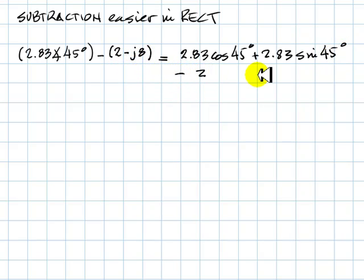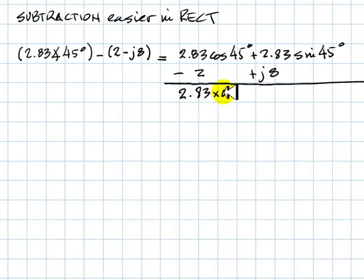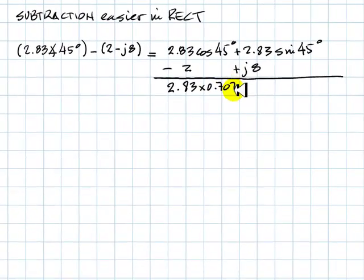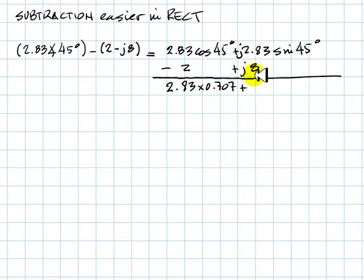That is minus 2 plus j8. We execute that operation. We know that the cosine of 45 is root 2 over 2, 0.707. And we do the operation. 2√3, that multiplies 0.707, plus there is a j missing here. j, 2√3, that multiplies 0.707, and that we add with negative 2, plus j8.